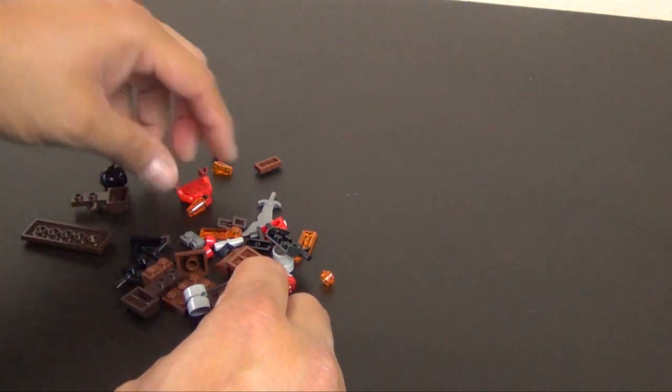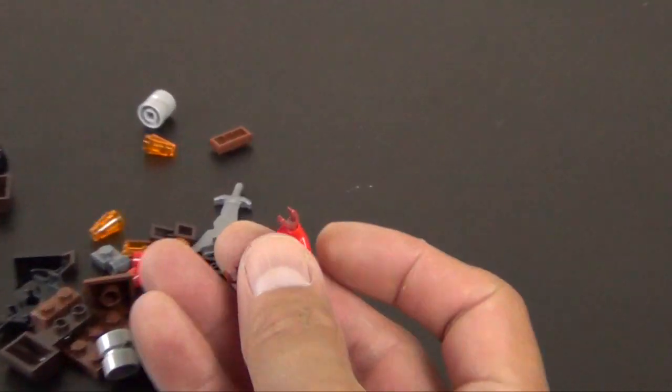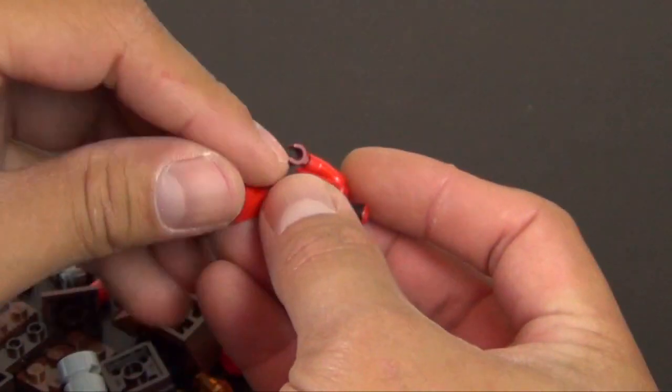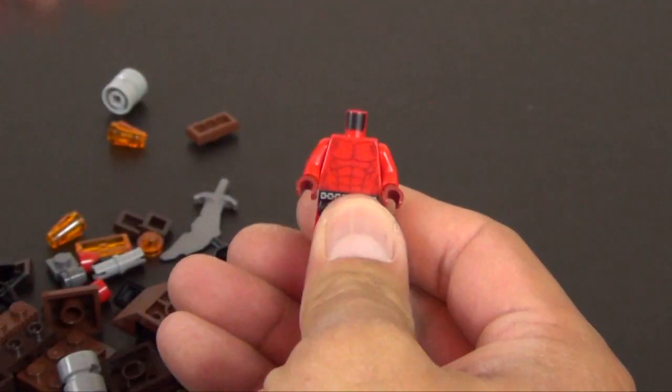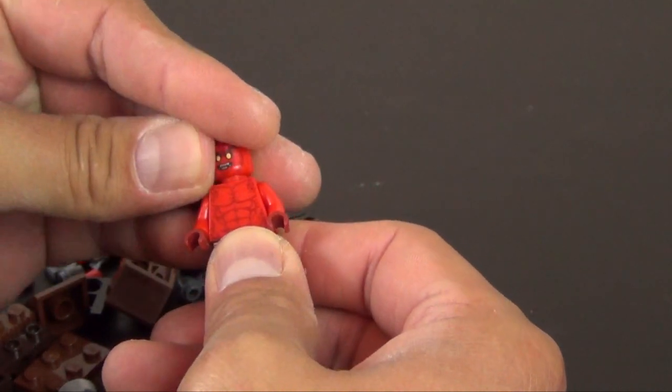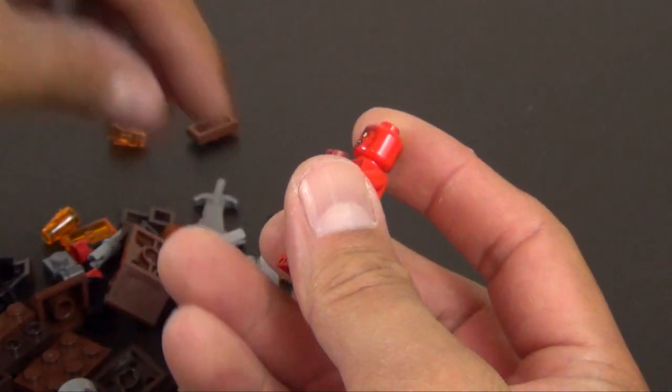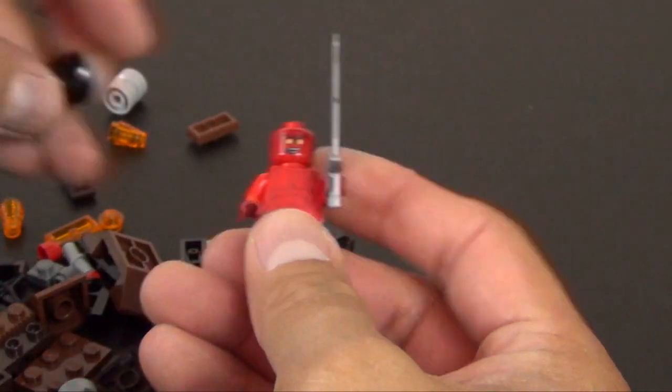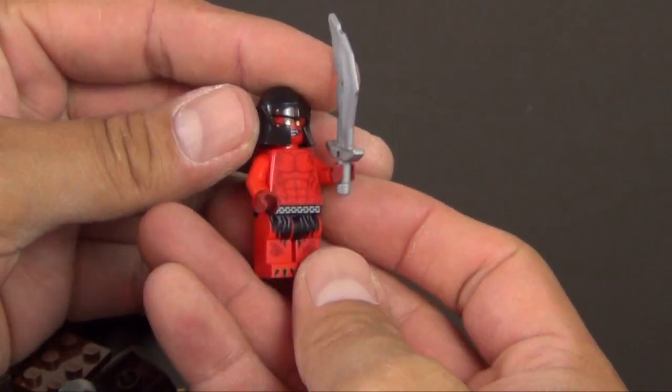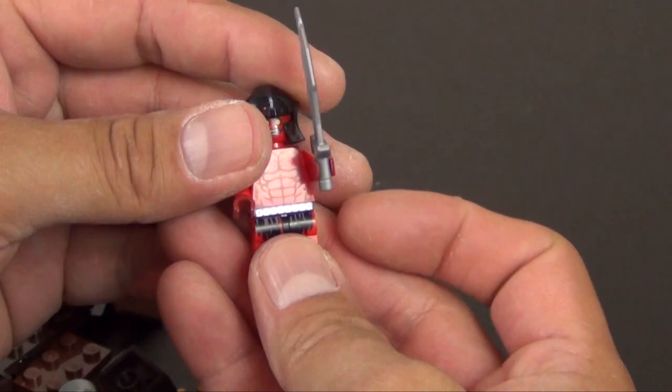So our first little portion of the build is the Lava Slinger minifigure. Mostly all red. Has a sword and the helmet. That is our minifigure.